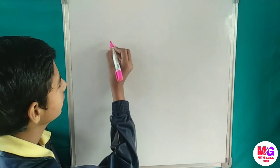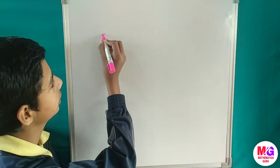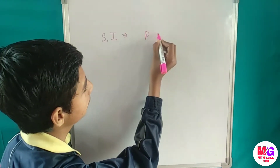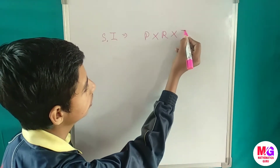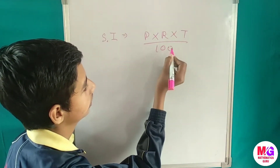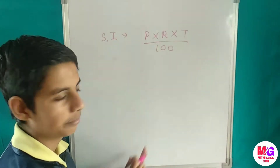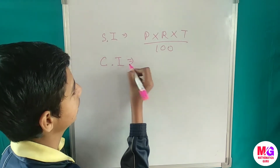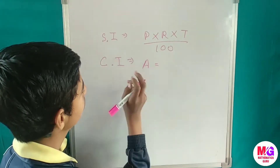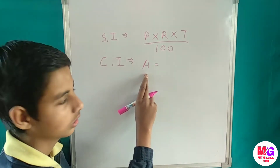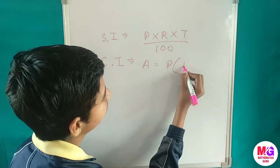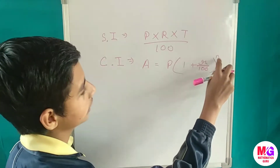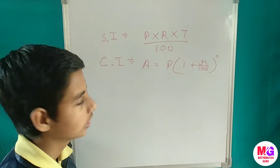In class 7, the formula for simple interest was P × R × T upon 100, meaning principal into rate into time. Now the formula for compound interest is different. First we have to find the amount A, and the formula is: A equals P times (1 plus R upon 100) to the power n, where n is the time.